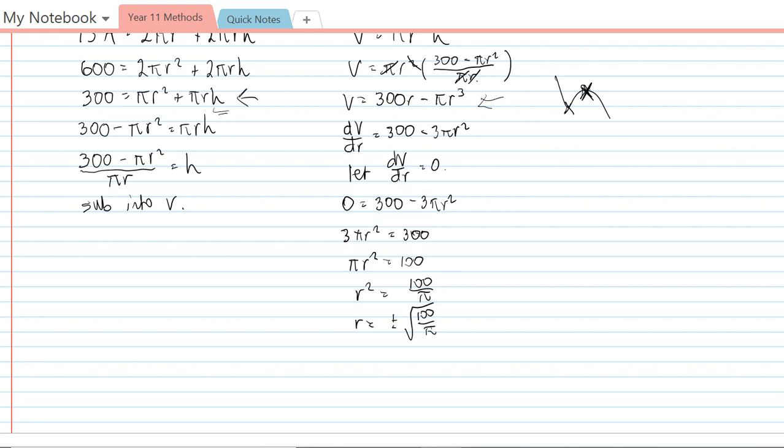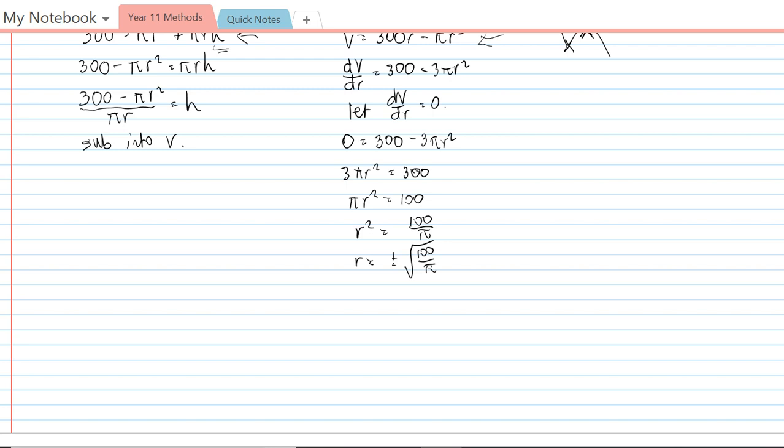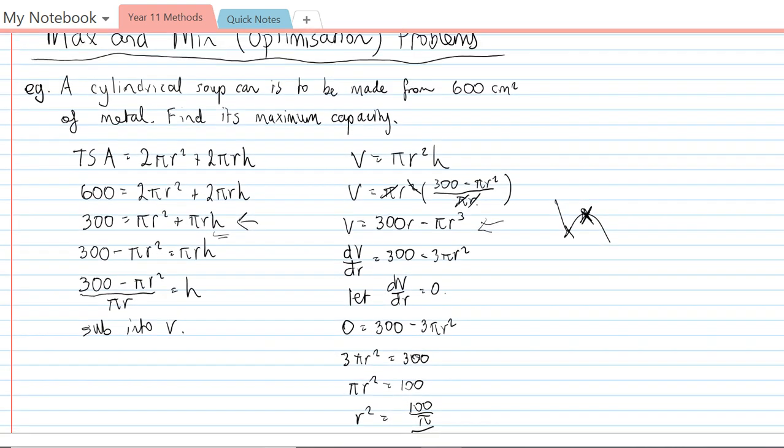And this one here, the maximum will be the positive root 100 on π. So what I can say is that the max occurs when r = √(100/π). Now we're not finished the question yet because we need to actually find the maximum capacity. So I need to substitute that into the volume rule.